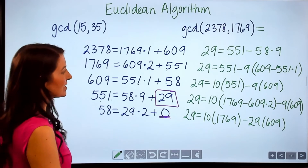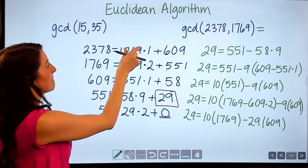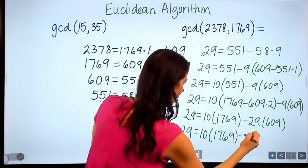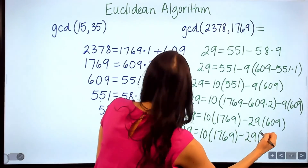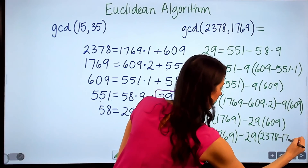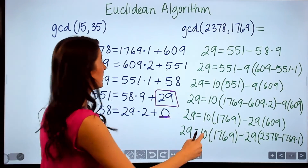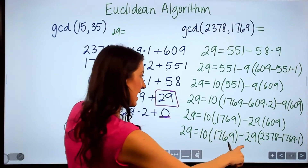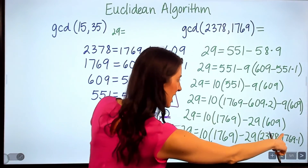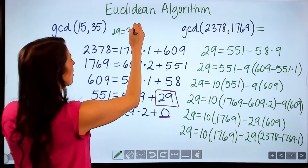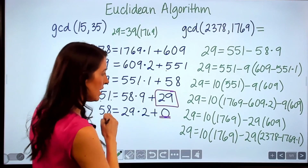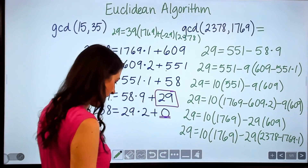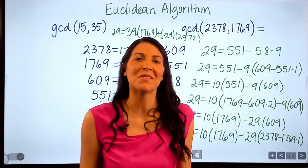Lastly, I'm going to replace 609 with 2378 minus 1769 times 1. I've run out of room so I'll write the final result over here. As I distribute, I have negative 29 times negative 1, which is positive 29, plus 10, giving 39 times 1769, and then negative 29 times 2378. So 29 equals 39 times 1769 plus negative 29 times 2378 as the linear combination.